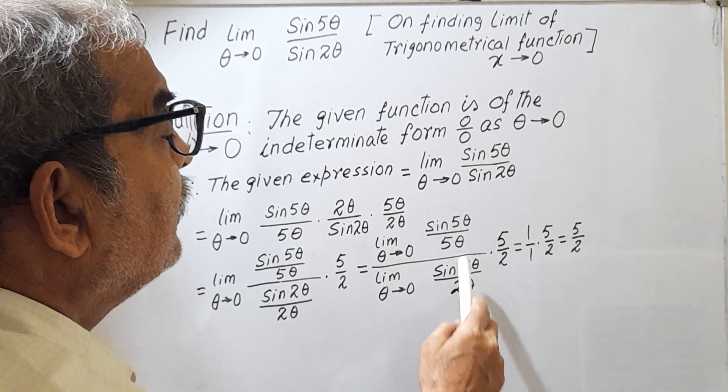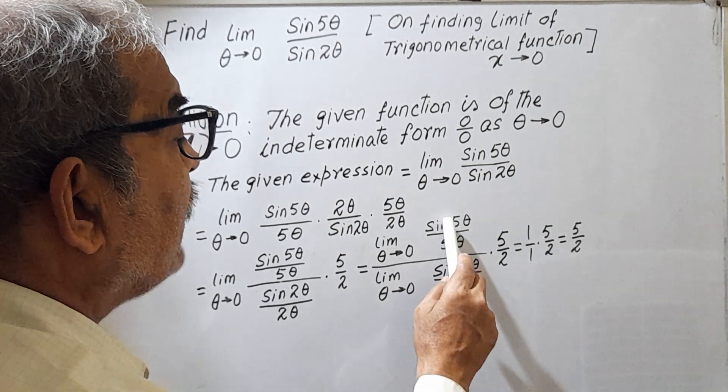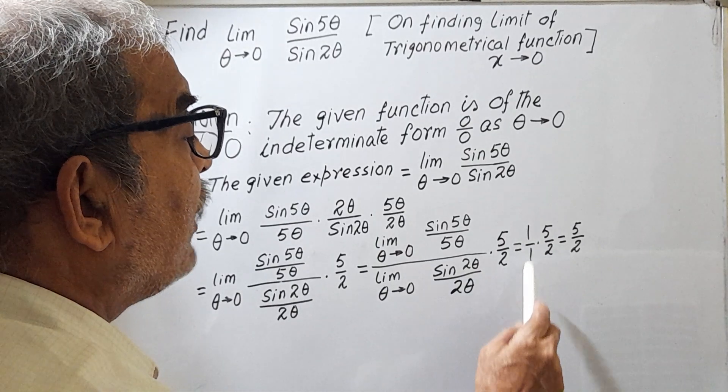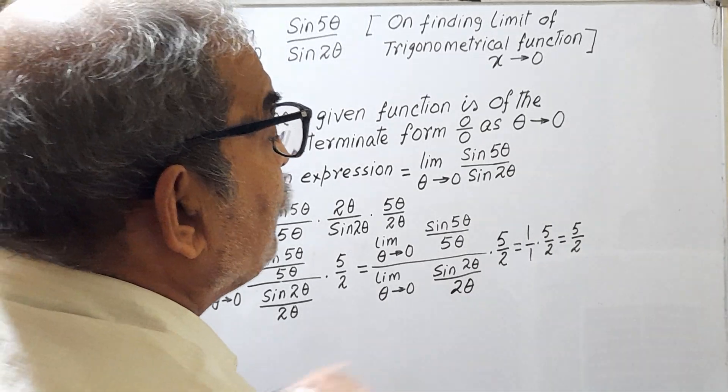So this is 1 by 1, this is 1 by 1. This total thing is 1, and this is 1. 1 by 1 into 5 by 2 equal to 5 by 2.